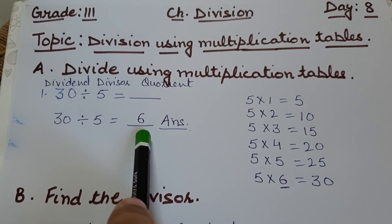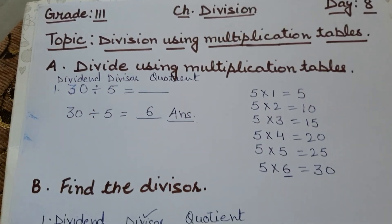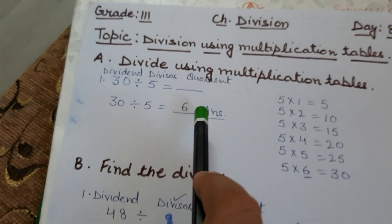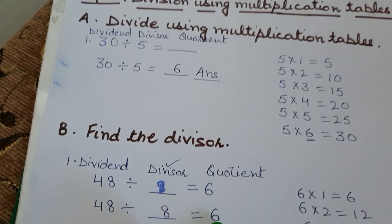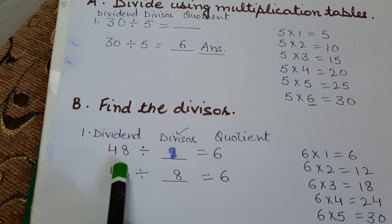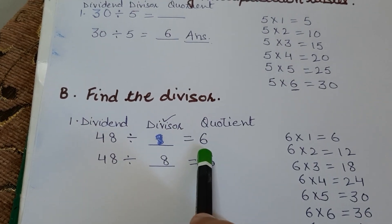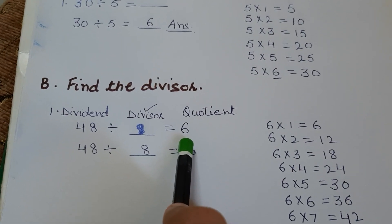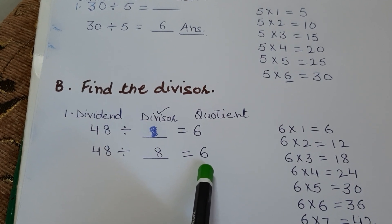I hope that is clear to all. Next is: find the divisor. Here you found the quotient, and now we will find the divisor. The statement is: 48 divided by which number gives a quotient of 6? The method is the same. Now we will recall the 6-times table.